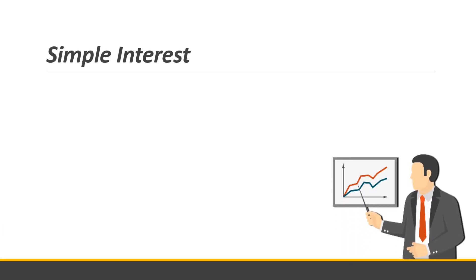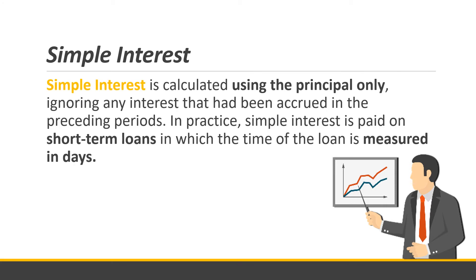Simple interest is calculated using the principal only — you ignore any interest that had been accrued in the preceding period. In practice, simple interest is paid on short-term loans in which the time of the loan is measured in days. That's why it usually doesn't reach one year — like seven months or three months — and the periods are calculated using days.